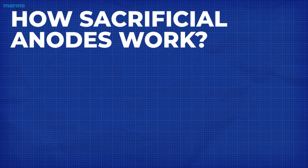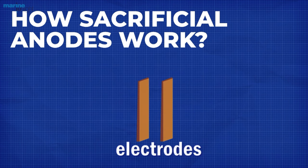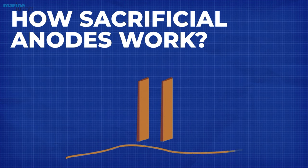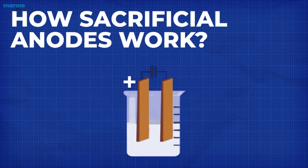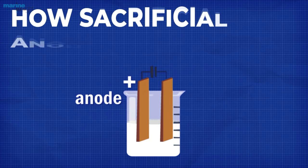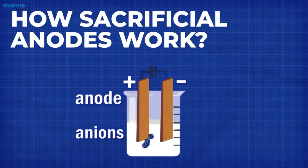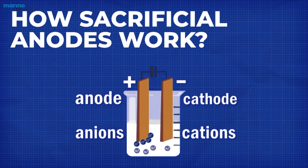Sacrificial anodes work on the principle similar to electrolysis. According to this principle, if an anode and a metallic strip are dipped in an electrolytic solution, the anode electrons will dissolve and deposit over the metallic strip, making it a cathode.